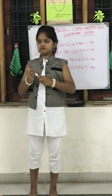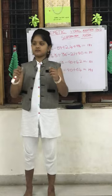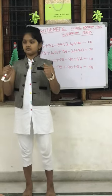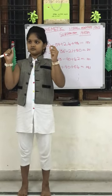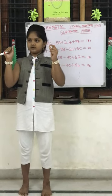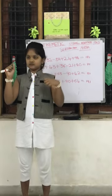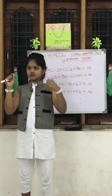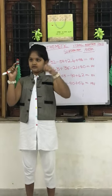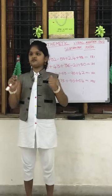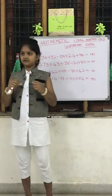Let us try the second question. 21, 50, 50 less 35, add 92, less 28. Answer is 50. Correct.